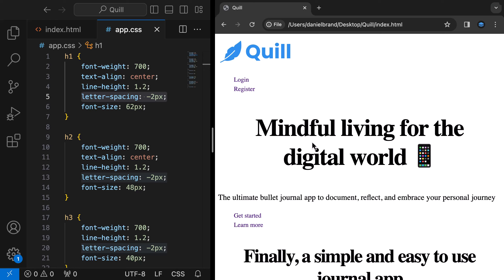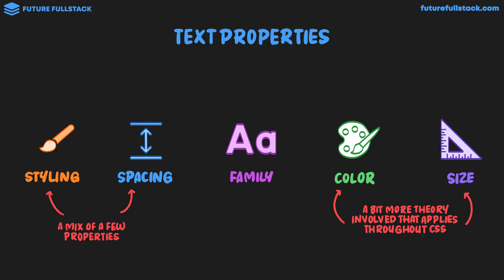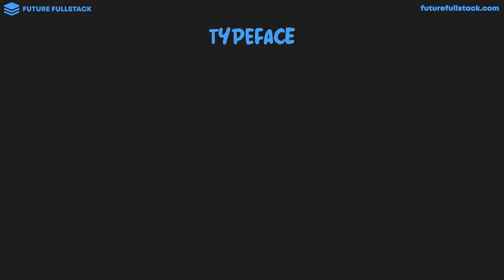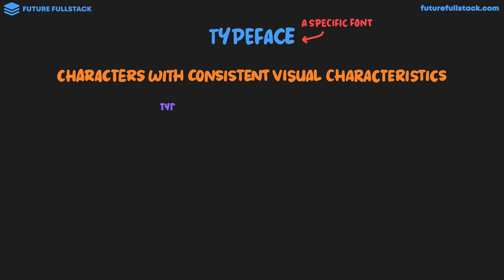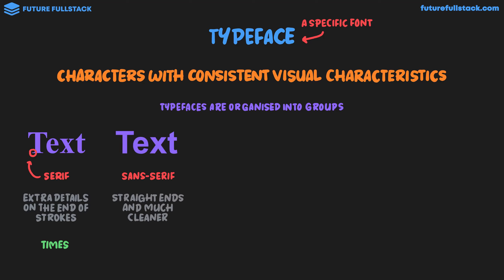In the next chapter, we'll explore how to change the overall look and feel of text by looking at text font — covering typefaces, font family, and Google fonts. A typeface is a specific font where characters share consistent visual characteristics. Fonts are organized into groups: serif fonts have extra details on the ends of strokes (like Times), sans-serif fonts have straight clean ends without those details (like Arial), and monospace fonts have letters that are all the same width.